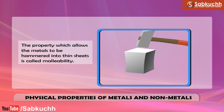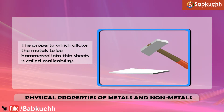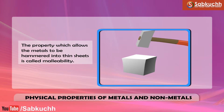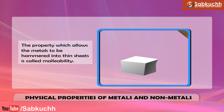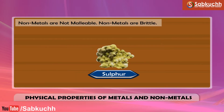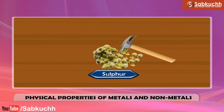Malleability. Metals are malleable. The property which allows the metals to be hammered into thin sheets is called malleability. It is due to the property of malleability that metals can be bent to form objects of different shapes by beating them with a hammer. Non-metals are not malleable; they are brittle, which means that non-metals cannot be beaten into thin sheets with a hammer. Non-metals break into small pieces when hammered.